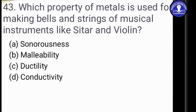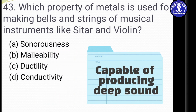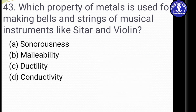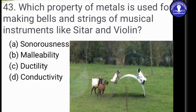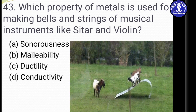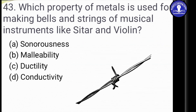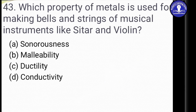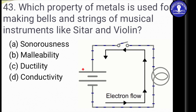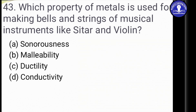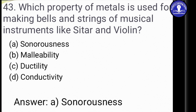Sonorousness means being capable of producing a deep sound. Malleability is the property by which metals can be beaten into thin sheets. Ductility is the ability to be drawn into wires. Conductivity refers to the ability of electrons or current to flow. The answer is Option A, Sonorousness — capable of producing deep sound — which is why it is used in making bells and strings of musical instruments.